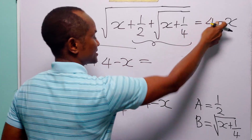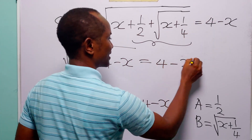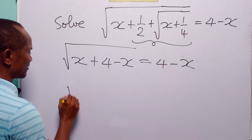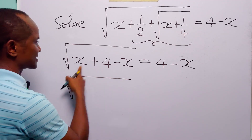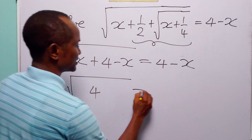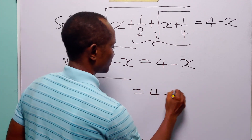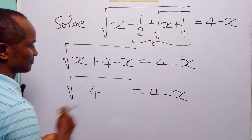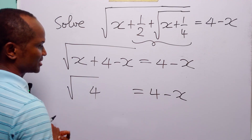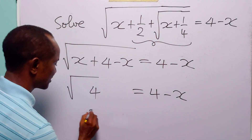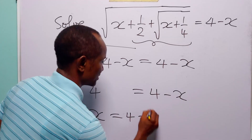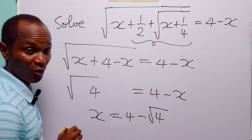This is still equal to 4 minus x. When we simplify this, the square root of x terms combine and we get 4 minus x equal to 4 minus x, which confirms our substitution.